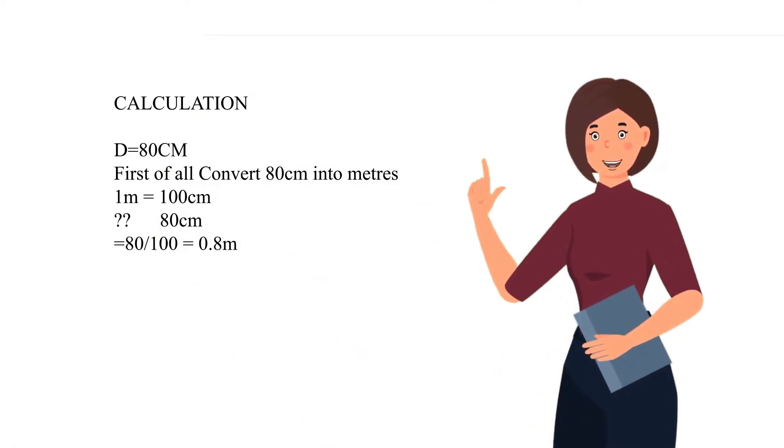Calculation. D equals 80 centimeters. First of all, convert 80 centimeters into meters. 1 meter equals 100 centimeters. What about 80 centimeters? 80 divide by 100 equals 0.8 meters.